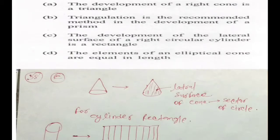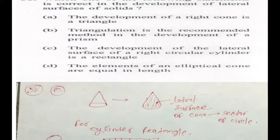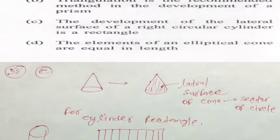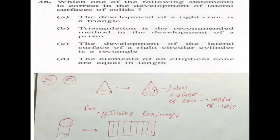The generator is a triangle — if you generate a cone by the rotating method it is a right triangle, not just a triangle. But for the lateral surface development we have a sector of a circle. The lateral surface of a cone is a sector of a circle. For option B, triangulation is the recommended method for development of prisms — that is not correct either.